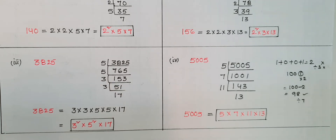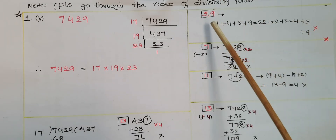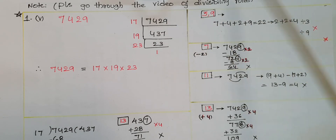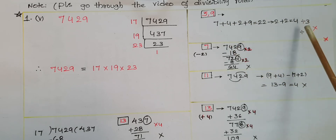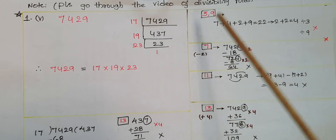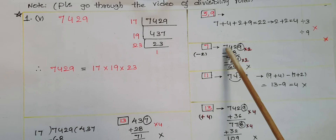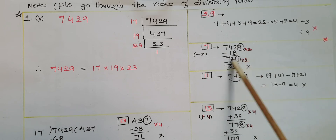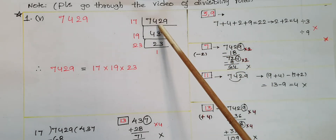The next number is 7429. The last digit is 9, so we try 3 using the divisibility rule: 7+4+2+9 = 22, which is not divisible by 3. The same sum 22 is also not divisible by 9, so 7429 is not divisible by 9 either. Trying 7 using the rule: multiply last digit 9 by 2 to get 18, subtract from 742 giving 724. Again: 4×2 = 8, 72−8 = 64. Since 64 is not divisible by 7, 7429 is not divisible by 7.